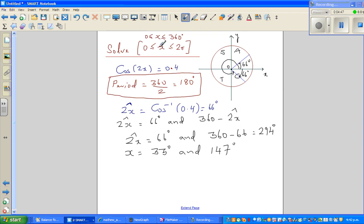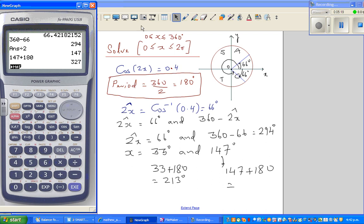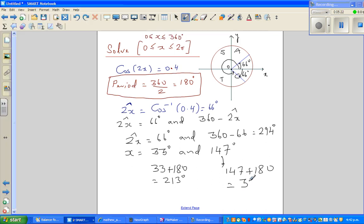But we want the answer from between 0 to 360. So the other angle would be, this other angle would be 33 plus 180 degrees, which is 213 degrees. And this fourth angle would be 147 plus 180. So let me get the calculator out. So it's 147 plus 180. So that is 327 degrees.